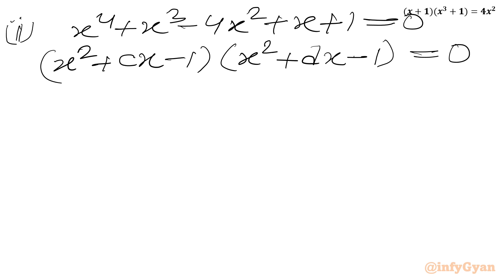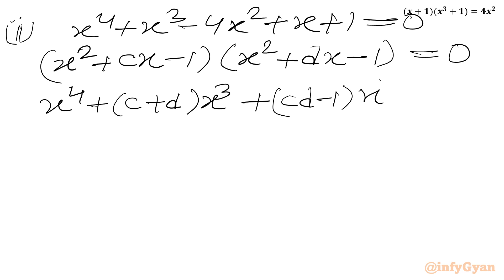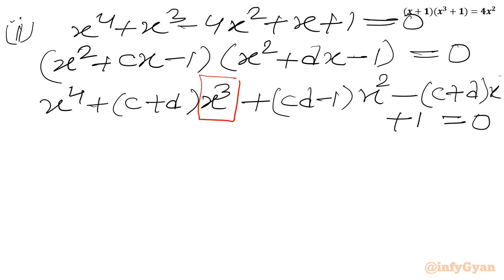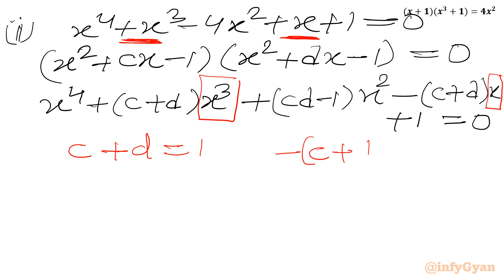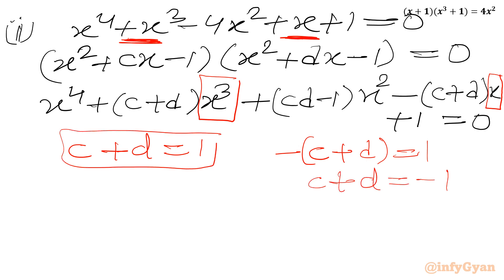For case 2, I consider (x² + cx - 1)(x² + dx - 1) = 0, where the product of constants is still +1. Expanding and comparing the coefficient of x³ gives c + d = 1, but comparing the coefficient of x gives -(c + d) = 1, so c + d = -1. Both equations cannot be true simultaneously, so case 2 gives no solution.